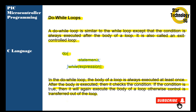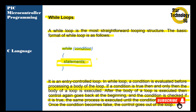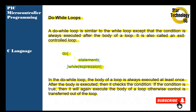In a while loop, if the condition is true, then the statement will execute. But in a do-while loop, it will always perform the statement first. After performing the statement, it will check the condition. If the condition is true, it will again repeat the statement; otherwise, it will exit from the do-while loop.